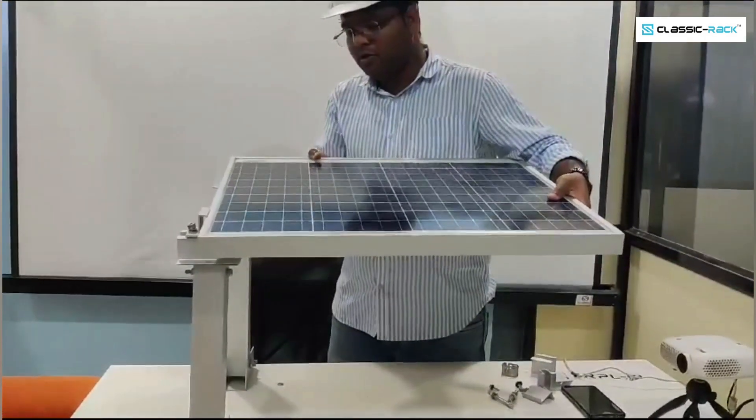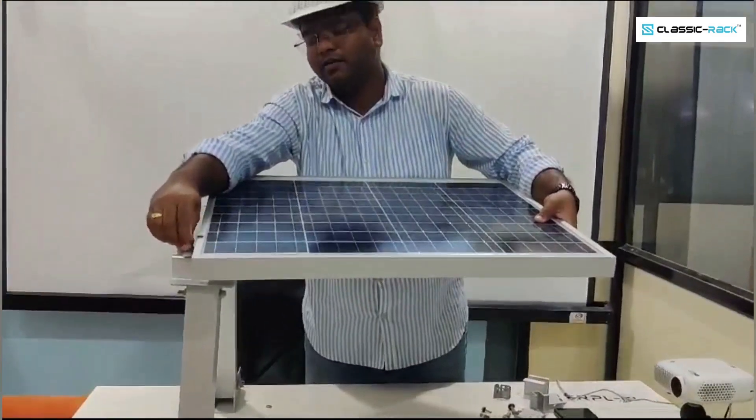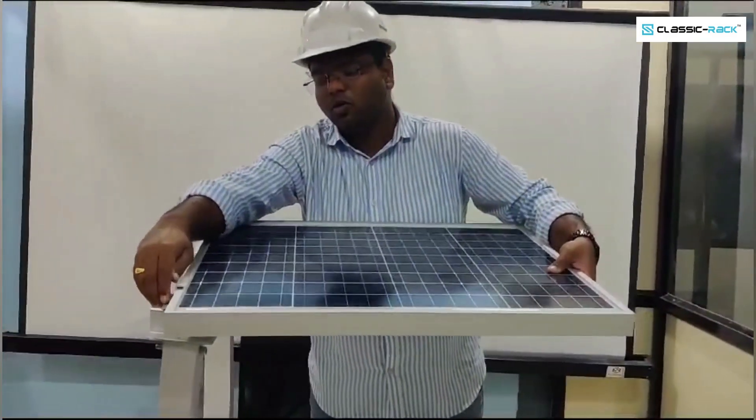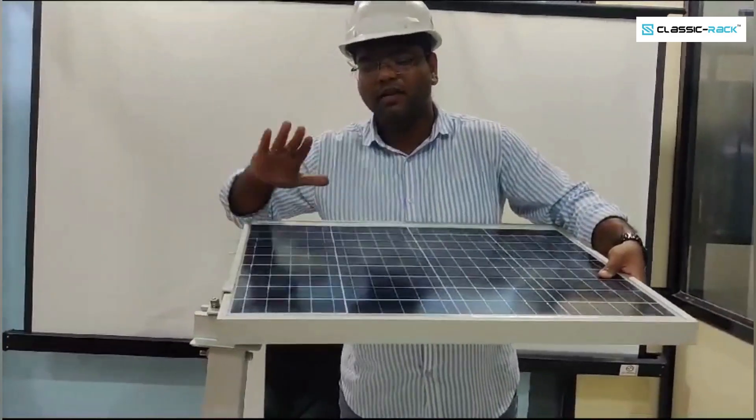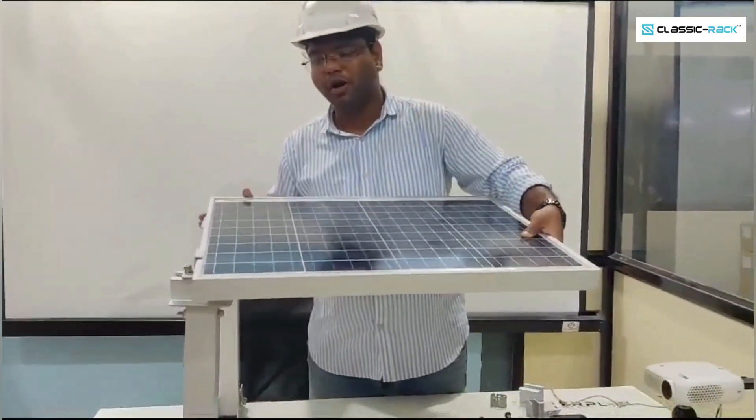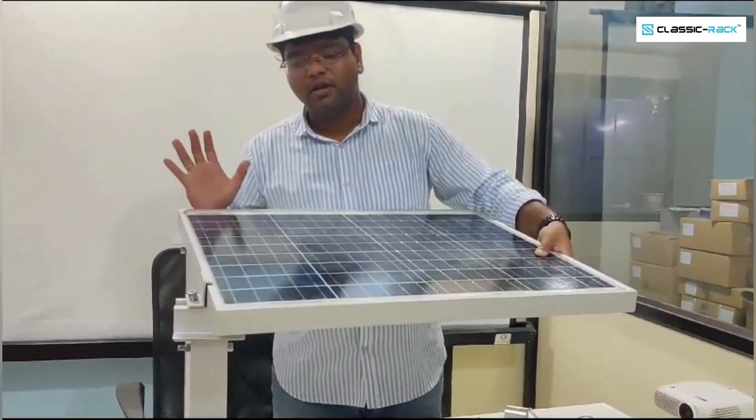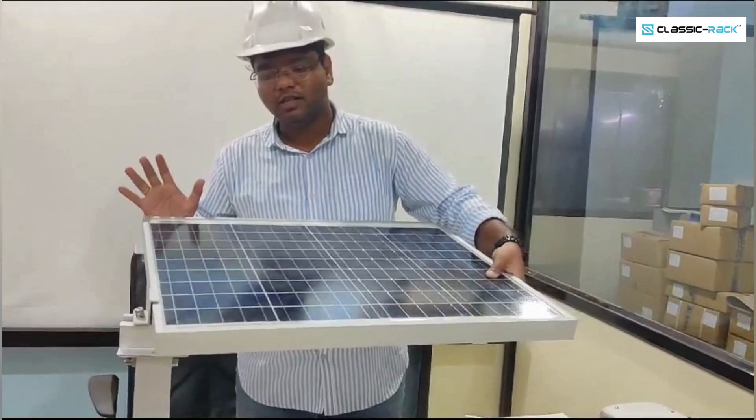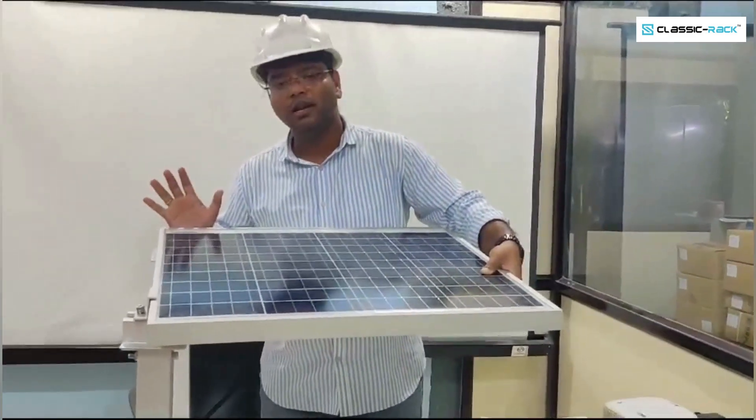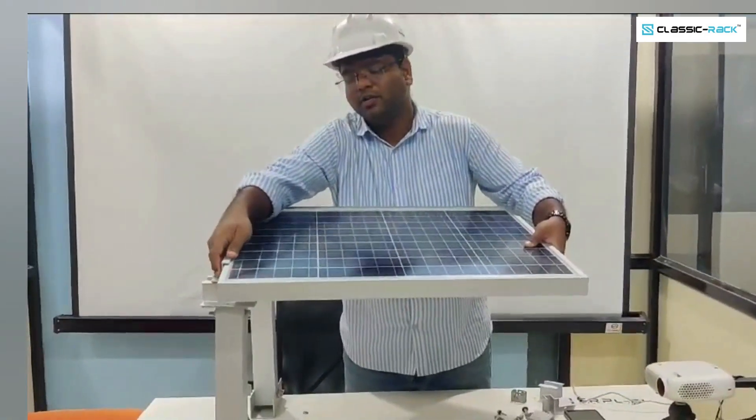If you place this end clamp and there is a chance of movement, you can adjust it according to your requirement. Once your panels come at this particular end, you can tighten firmly so that this panel fixing will be done appropriately as per your requirement. This easy installation will help you to install your solar structure quickly at your site.